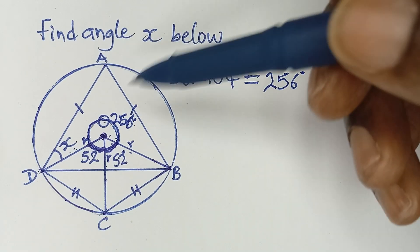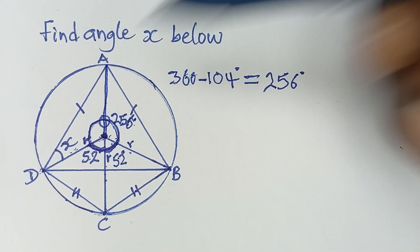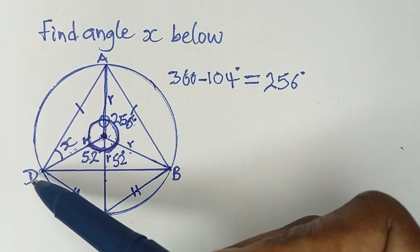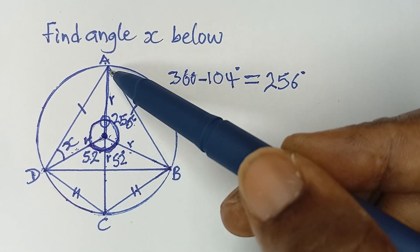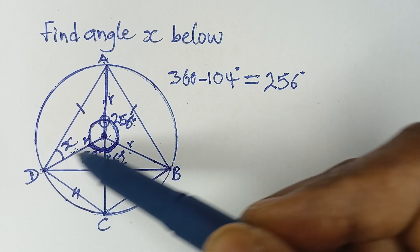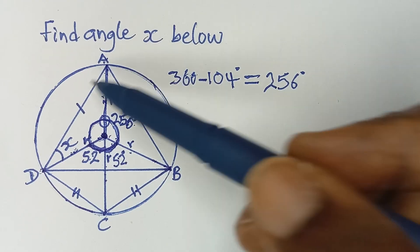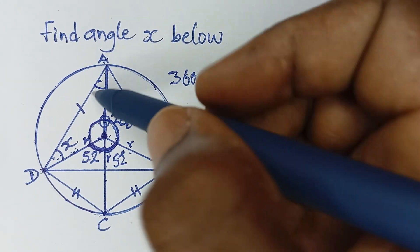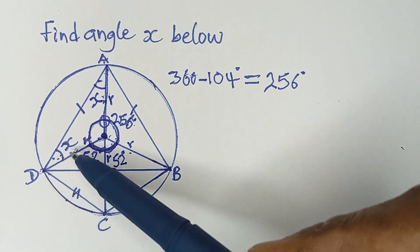Now if I trace a straight line from here down to point A, you agree that this line is also a radius. So in triangle DOA, this is a radius, this is a radius, and DA is the third side. This triangle is isosceles because two sides are radii and therefore equal. The base angles of an isosceles triangle are equal, so if one base angle is x, the other is also x.